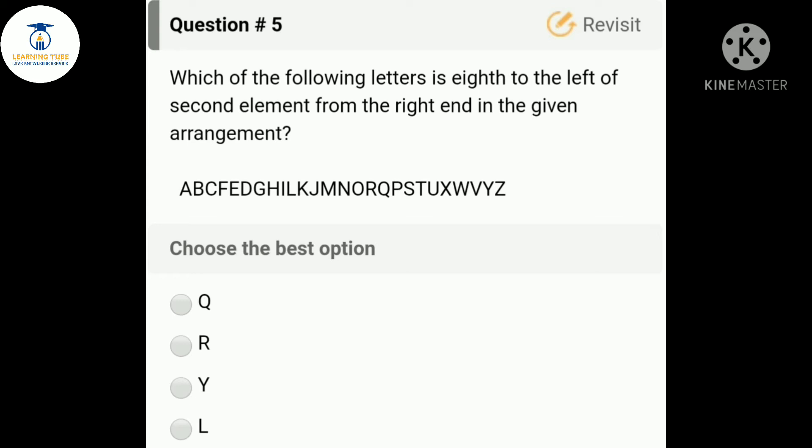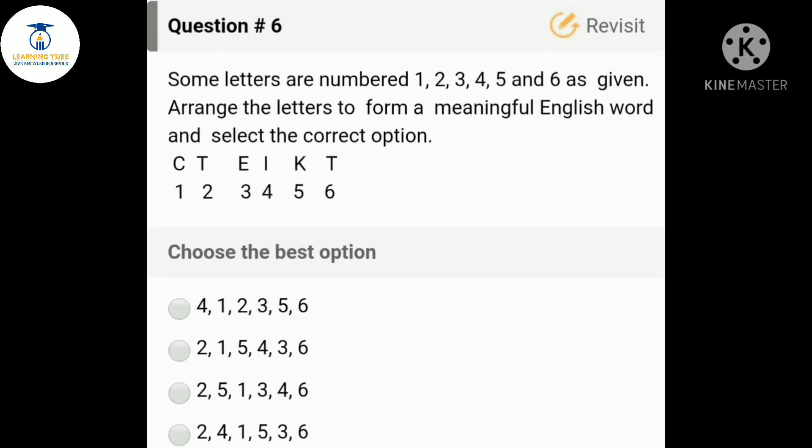The sixth question is: some letters are numbered 1, 2, 3, 4, 5, and 6 as given. Arrange the letters to form a meaningful English word and select the correct option. The meaningful English word is TICKET - T-I-C-K-E-T. So the arrangement of the letters is 2, 4, 1, 5, 3, 6, which is in option D.